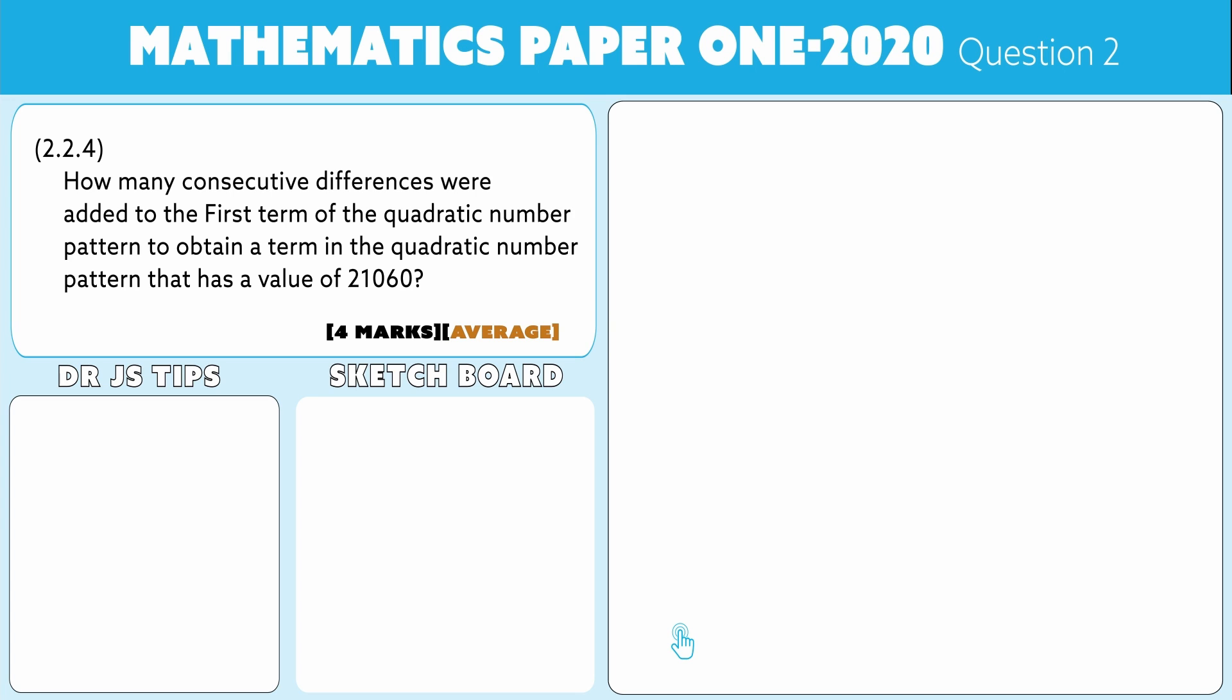Now folks, that is for four marks, so yes, we've got to read it twice. Do I want a Tn or an Sn? This is the big thing: is this a term number I want, or am I going to work with a term, or am I going to work with the sum of the terms? Well, they say how many consecutive differences, so I know that I need to know the number of d's that were added to the first term in the sequence.